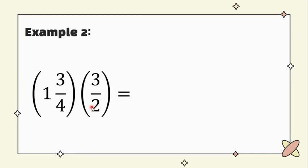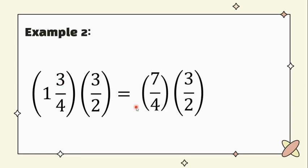Another: negative one and three-fourths times three halves. As you can see here, we have a mixed number. We cannot multiply a mixed number by a fraction. Therefore, we have to convert this mixed number first into an improper fraction. To do that, we need to multiply the denominator by the whole number. It's four times one, the product is four. Then we add the product to the numerator. That's four plus three, which equals seven over four.